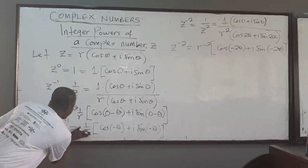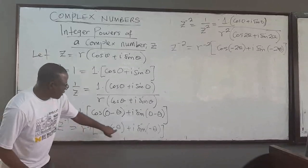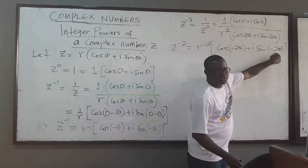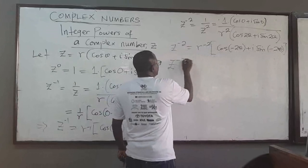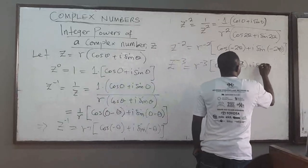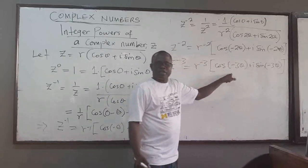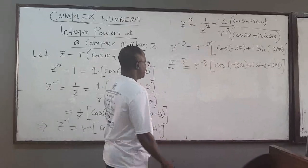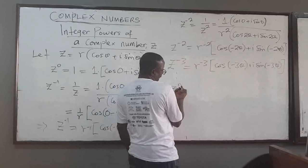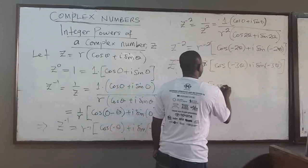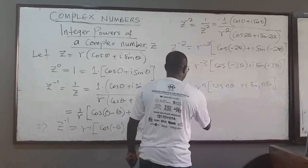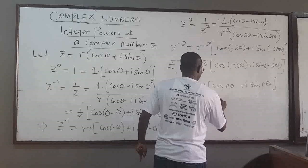So you can see the pattern: z⁻¹ gives r⁻¹, cos(−θ), sin(−θ); z⁻² gives r⁻², cos(−2θ), sin(−2θ). You can guess that z⁻³ will be r⁻³(cos(−3θ) + i sin(−3θ)). For negative integers, I can show that z^n = r^n(cos nθ + i sin nθ) where n is negative, and n belongs to the negative integers.